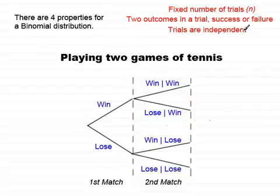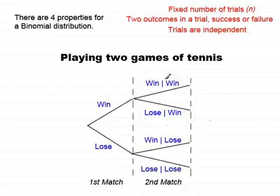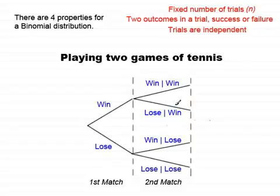The third property is that trials are independent. Looking at this trial — the second match — the notation shown means: the probability of winning the next match given that I won the first match. Winning or losing in the second match depended on how I performed in the first match, so this trial is not independent of the first. Therefore, this tree diagram does not fit the properties for a binomial distribution — I need independent trials.